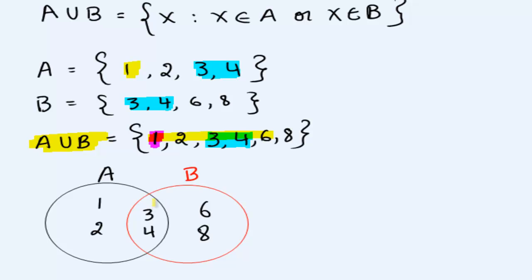So the union is going to have all the things that are in A and all the things that are in B. So this yellow area represents our union.